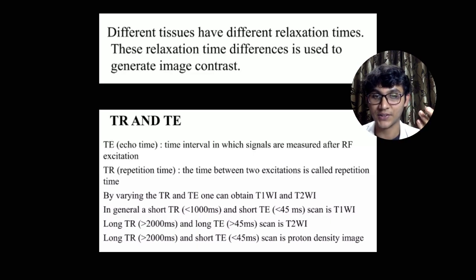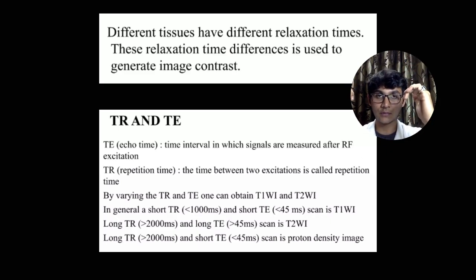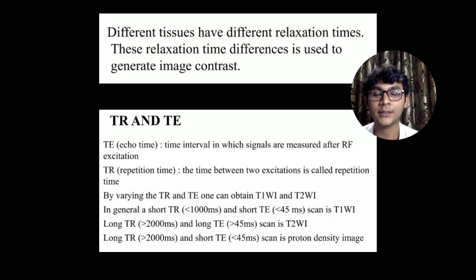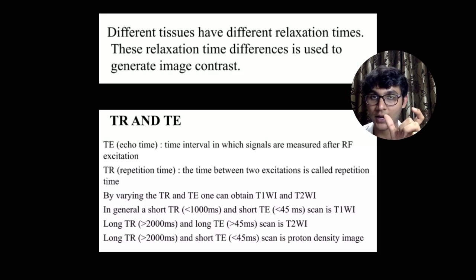In general, a short TR and short TE characterize T1 weighted images — shorter time intervals between RF shocks and shorter periods for cell realignment. Longer TR and TE characterize T2 scans and sequences like FLAIR and DWI. Shorter TR and TE are for T1 weighted images.